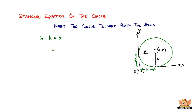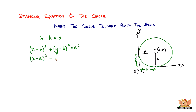So naturally, the standard equation is given as: (x minus h) squared plus (y minus k) squared equals a squared. When h equals k and both of them are equal to a, h and k get replaced by a. So it becomes (x minus a) squared plus (y minus a) squared equals a squared.